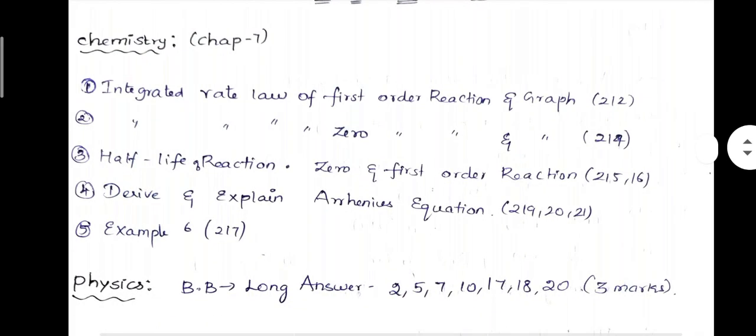So in chemistry, we will plan 2 marks and 3 marks. We will complete 2 marks and 3 marks in chemistry. That is the book back. You can ask the book back, and it is added.